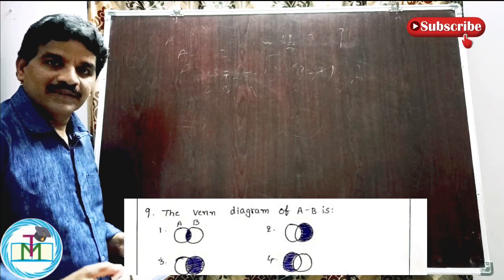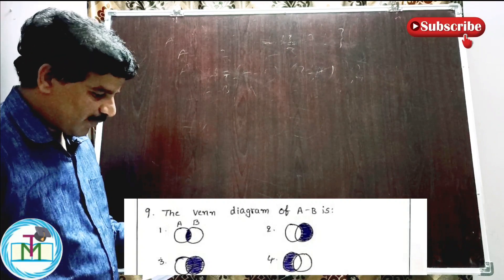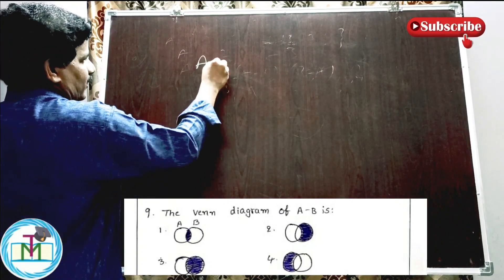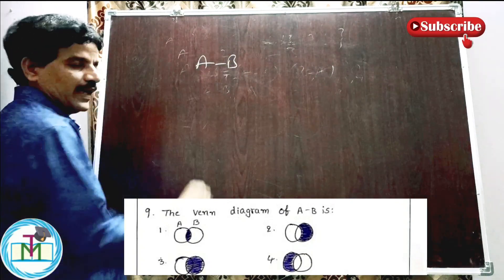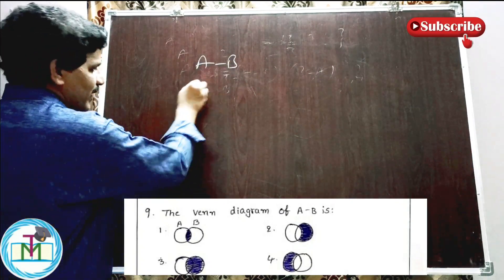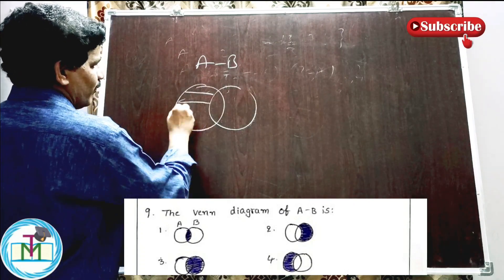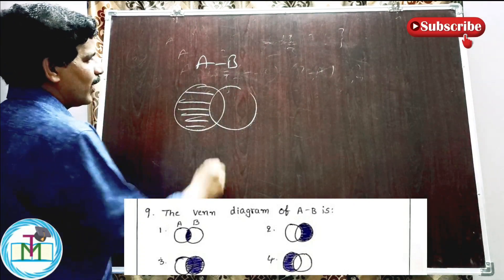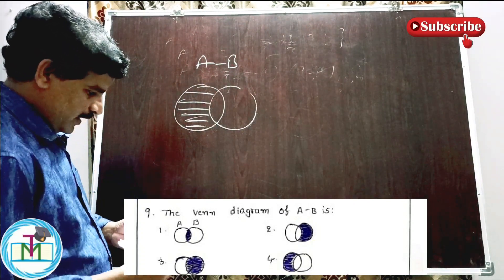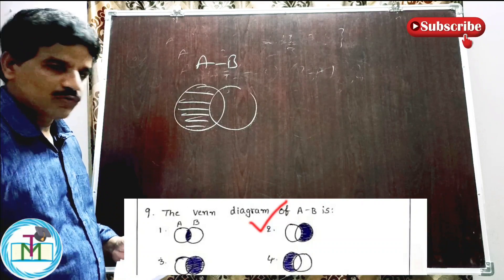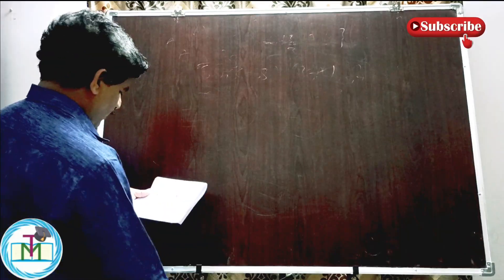Question number nine: the Venn diagram of A minus B. A minus B means elements that belong to A and don't belong to B. Option 2 is the right answer.